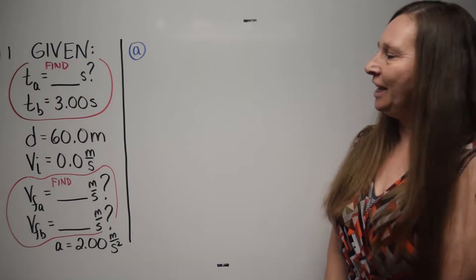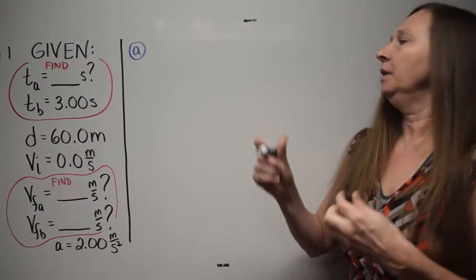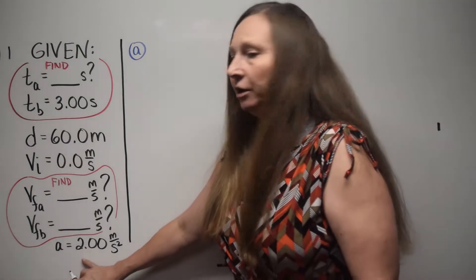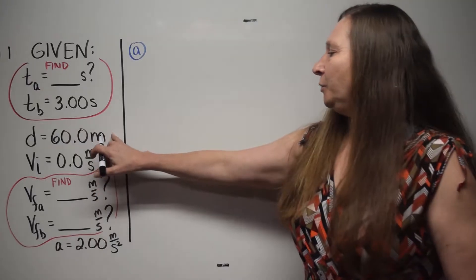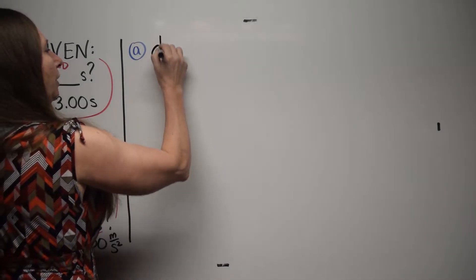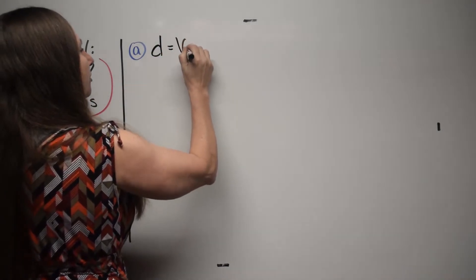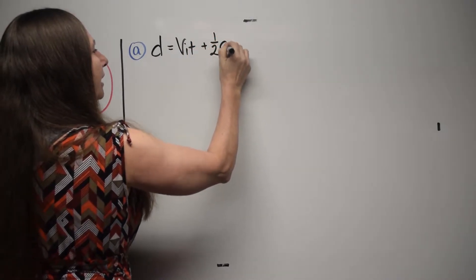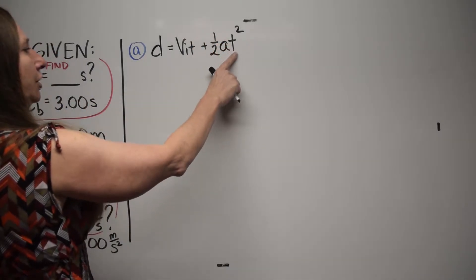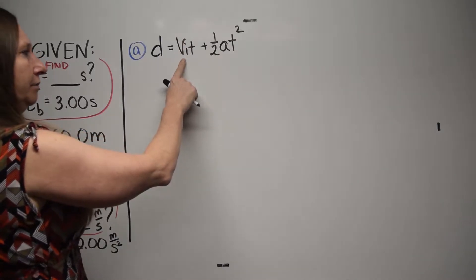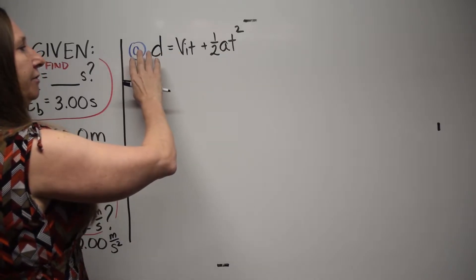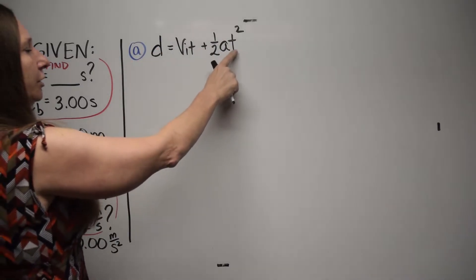So, how long did it take her to cover the 60 meters? We're trying to find a time, so we need an equation with time. We've got acceleration, V-initial, and displacement. I'm going to pick equation number 4: D equals V-initial·T plus one-half·A·T². We have V-initial, D, and A — the only thing we're trying to find is time.